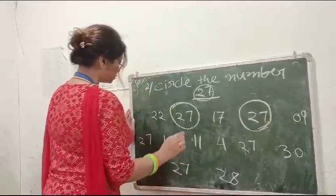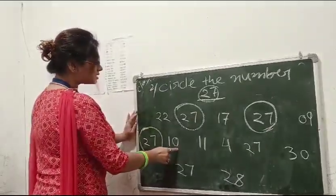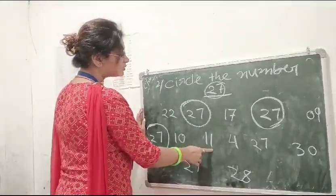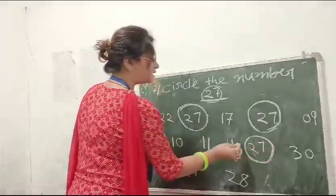09. No. 27. Yes. Circle it. 10, 10. No. 15, 11. No. 4. No. 27, 27 is circling.